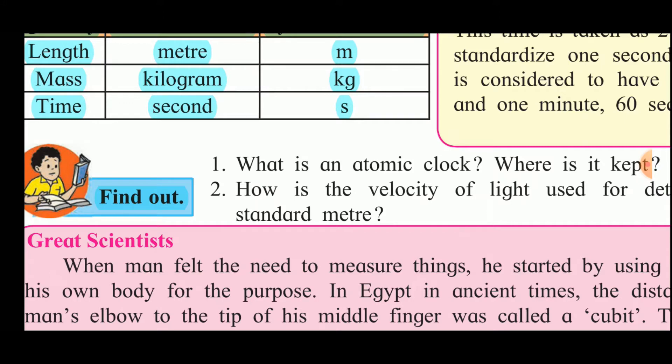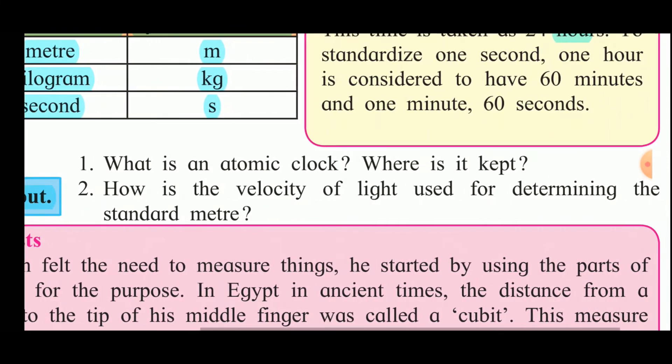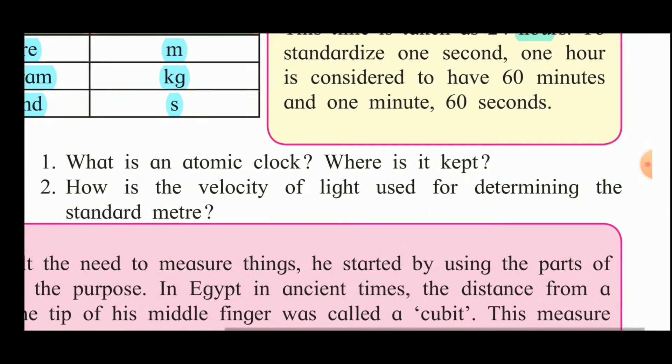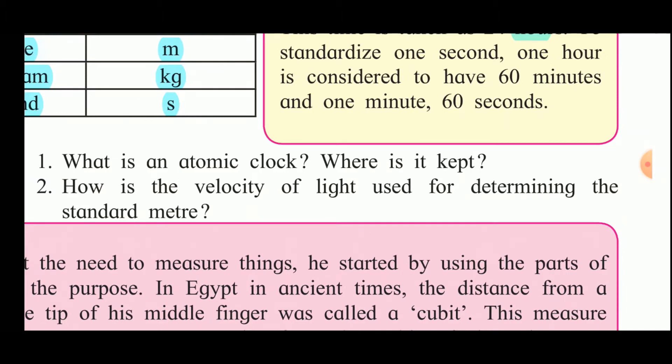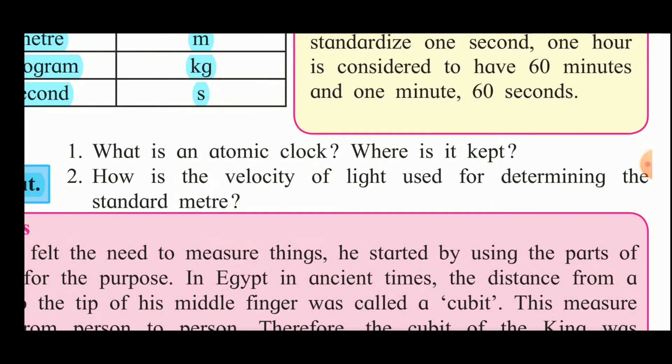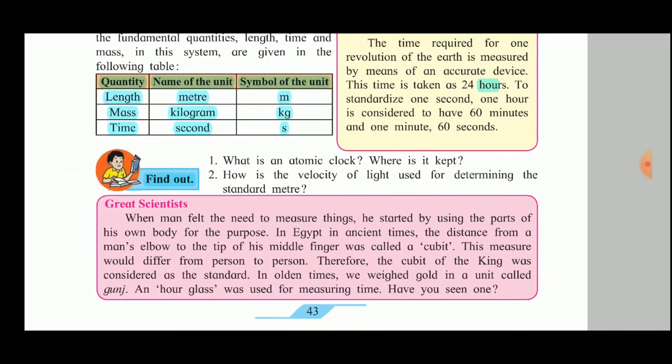How is the velocity of the light used for determining the standard meter? The velocity of light is taken as 3 into 10 raised to power 8 meter per second. The distance traveled by light in one second is considered as the 1 meter. This is how the velocity of light is used to find accurately the distance of 1 meter.